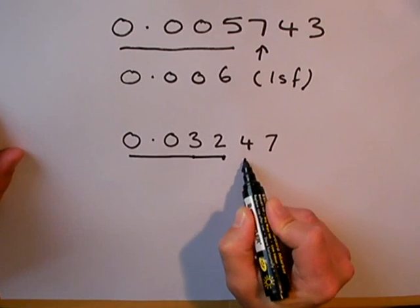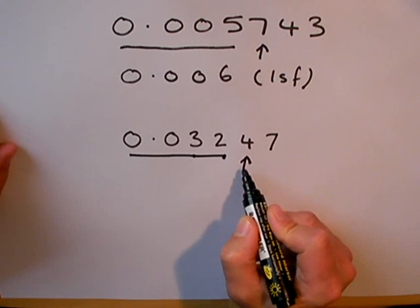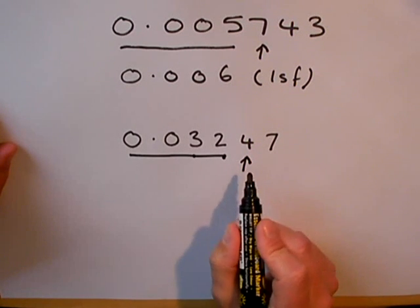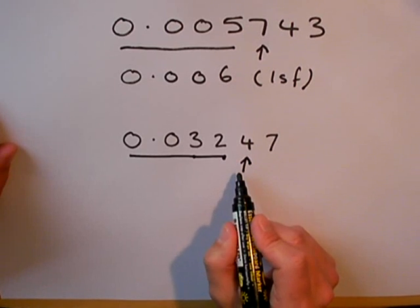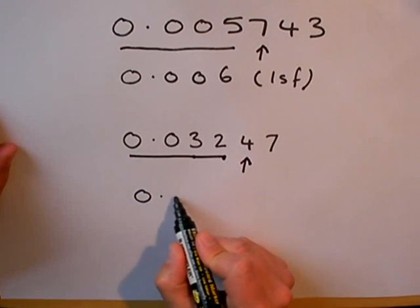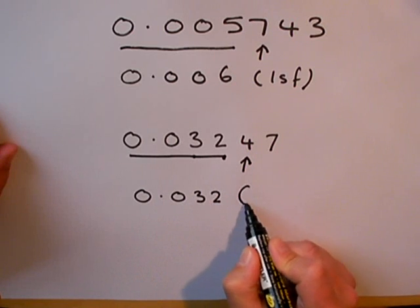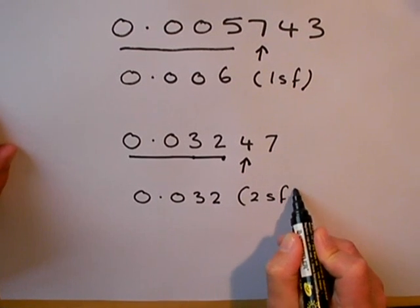Now look at the next digit to decide whether I'm going to round up or whether I'm going to round off. Because this is less than 5, I'm going to round off. And the answer is 0.032. I've rounded this off to two significant figures.